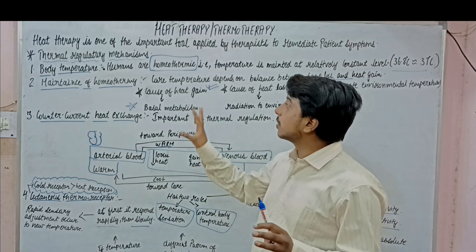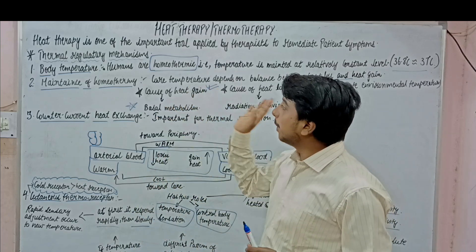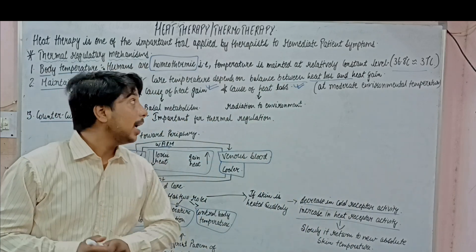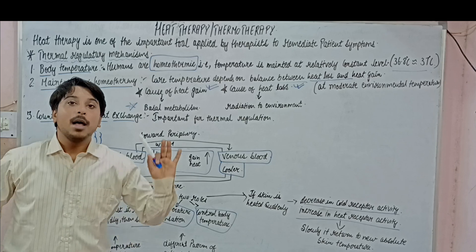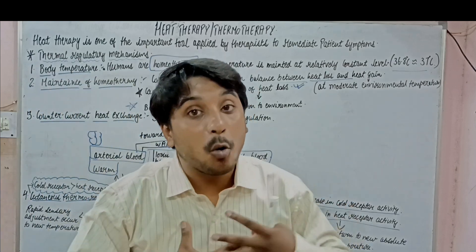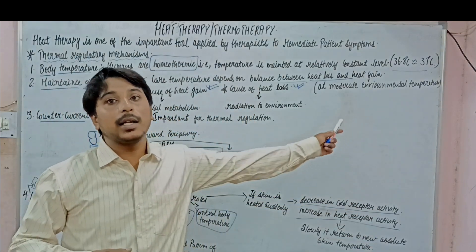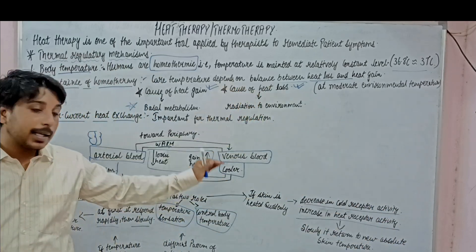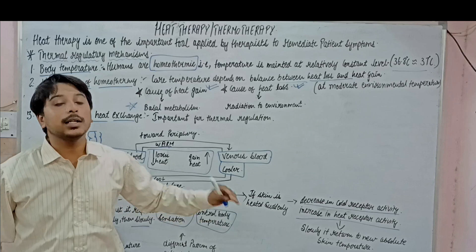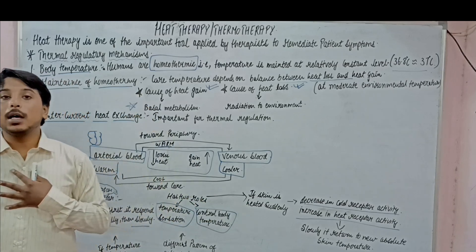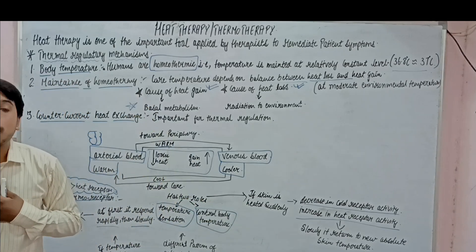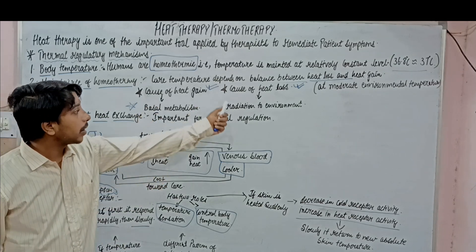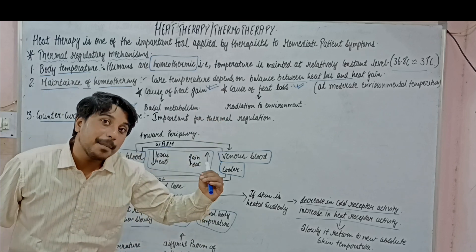This is about the first lecture of heat therapy. We have completed the thermoregulatory mechanisms. We covered: body isotherm lines — how the diagram shows that in the lower part (the foot region), temperature is much lower as compared to the core part. Then the maintenance of homeothermy — how we produce heat and how we lose heat, and what normal temperature is.